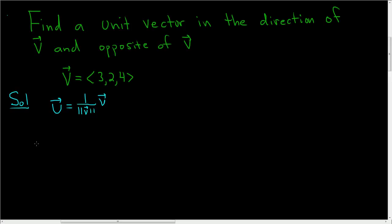So to work this out, let's first work out the magnitude. The magnitude of v is the square root of, and then you just square each component. So 3 squared plus 2 squared plus 4 squared.